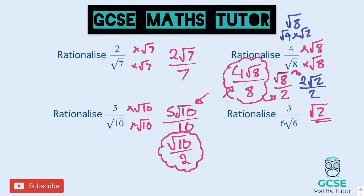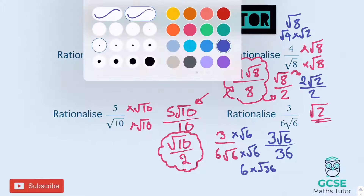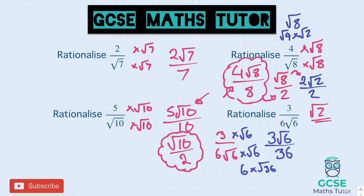The last one: times the top and bottom by root six. We have three over six root six. On the top we get three root six — and root six doesn't simplify. On the bottom, six lots of root thirty-six: six times root thirty-six is six times six, so we get thirty-six on the bottom. The top and bottom both divide by three, so dividing the top by three gives root six, and the bottom by three gives twelve. So root six over twelve is our final answer.